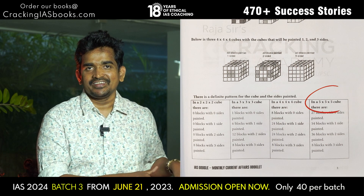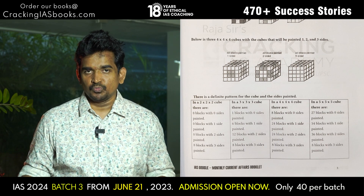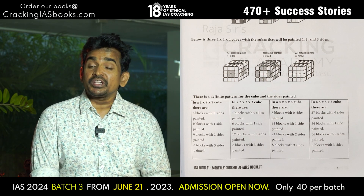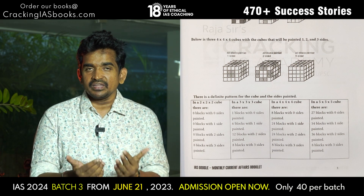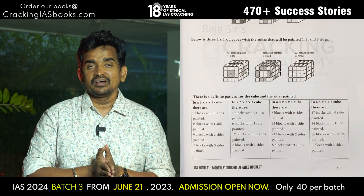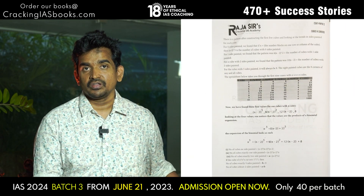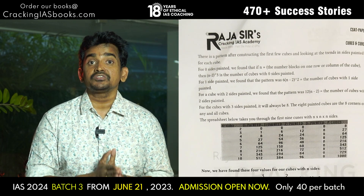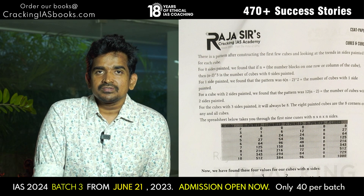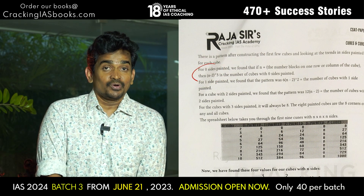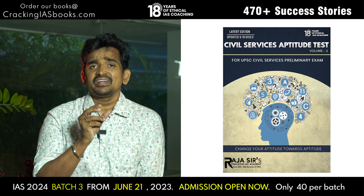You just see the tabular column in our textbook — the fourth column shown here. In a 5×5×5 cube, it gives 27 blocks with 0 sides painted. There is also a formula on page number 21: (n−2)³. In our case, (5−2)³ = 27. So this problem is directly from our CSAT textbook volume 2, page 20 and 21 of the cubes and cuboids chapter. You must understand the pattern — cubes and cuboids are very easy to tackle.